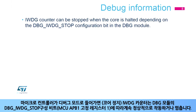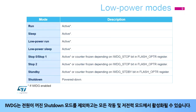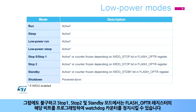The IWDG can be active in all running and low power modes, except in shutdown mode where it is powered down. Nevertheless, in stop 0, stop 1, stop 2, and standby modes, the watchdog counter can be frozen by programming the corresponding bits in the FLASH OPTR register.